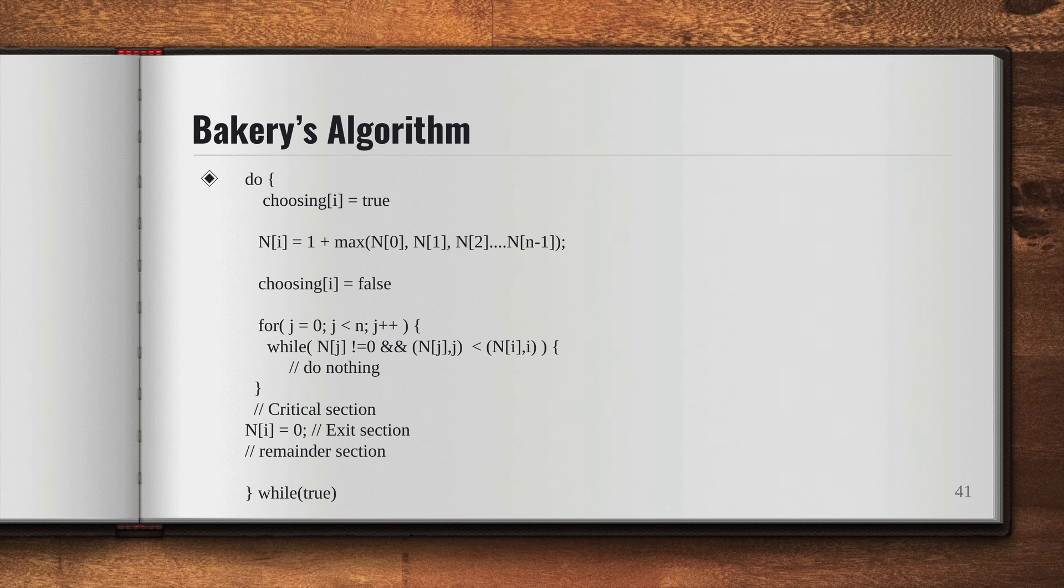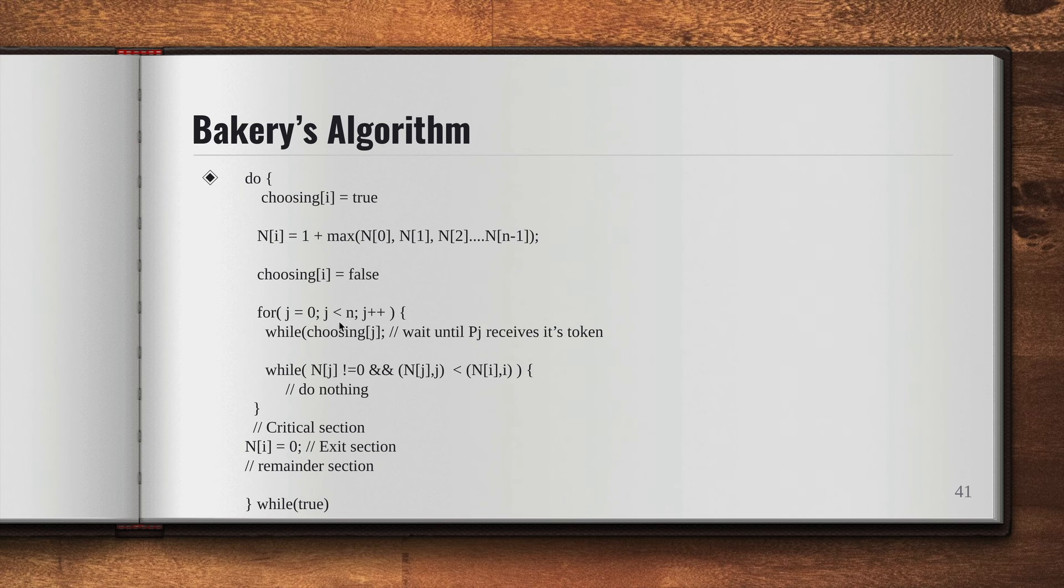And here it's going to wait until the process Pj finishes choosing its token number. Pj then waits until all the processes with smaller token numbers have been served. And once that is done, it's going to enter the critical section.